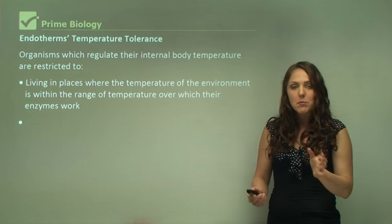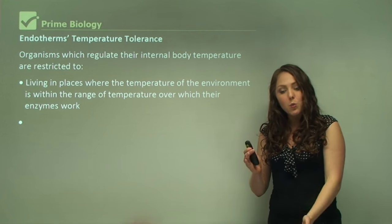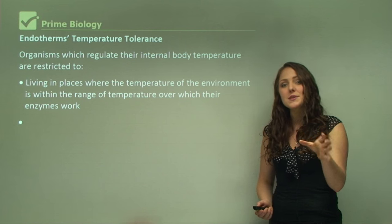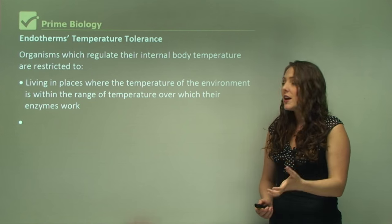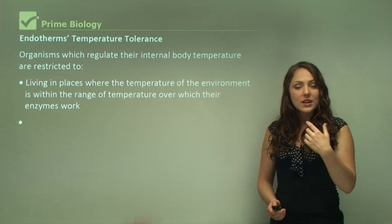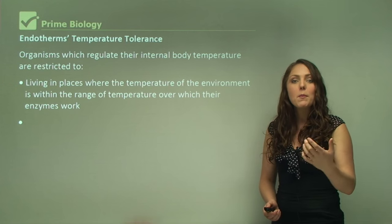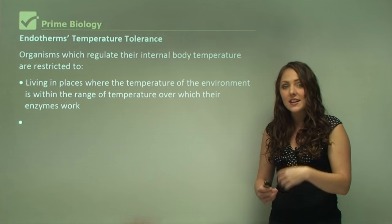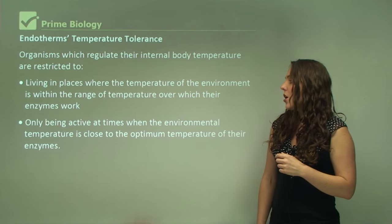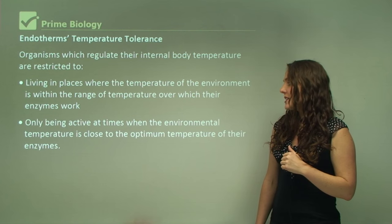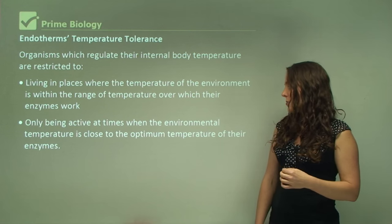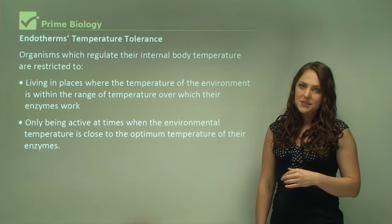If you're an aquatic organism, you might have enzymes that work in a cooler temperature range. If you live in the desert, organisms out there might have enzymes that work in a warmer temperature range. Ectotherms are only active at times when the environmental temperature is close to the optimum temperature of their enzymes.